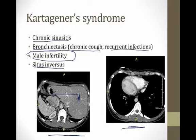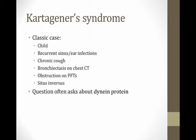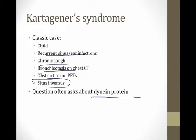Situs inversus doesn't carry any abnormal consequences in and of itself and is sometimes discovered incidentally on imaging. The classic board exam case of Kartagener syndrome is a child with recurrent sinus or ear infections and a chronic cough, bronchiectasis on chest CT, obstruction by PFTs, and situs inversus on imaging. Exam questions often ask about the dynein protein, so remember that is what's involved.